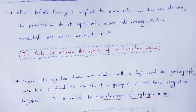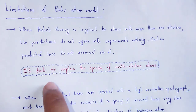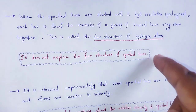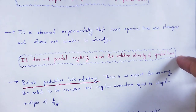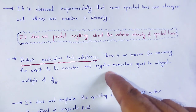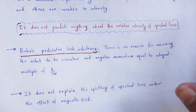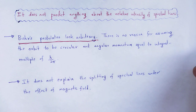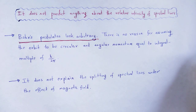So, with the help of this video lecture, we understand the limitations of Bohr's atom model. First, it fails to explain the spectra of multi-electron atoms. Second, it does not explain the fine structure of spectral lines. Third, it does not predict anything about the relative intensity of spectral lines. Fourth, the postulates look arbitrary — there is no reason that the orbit is circular and its angular momentum equals an integral multiple of h/2π. Last, it does not explain the splitting of spectral lines under the effect of a magnetic field. Thank you.